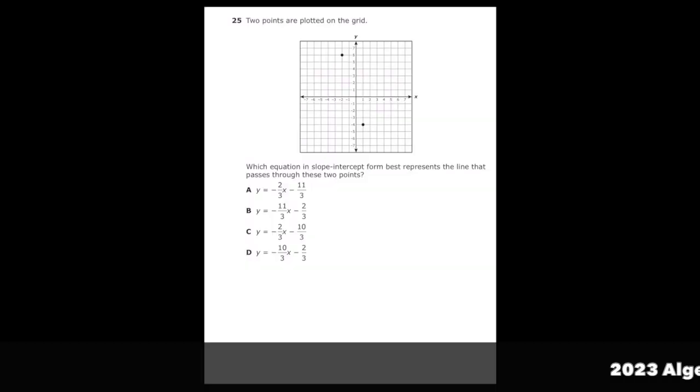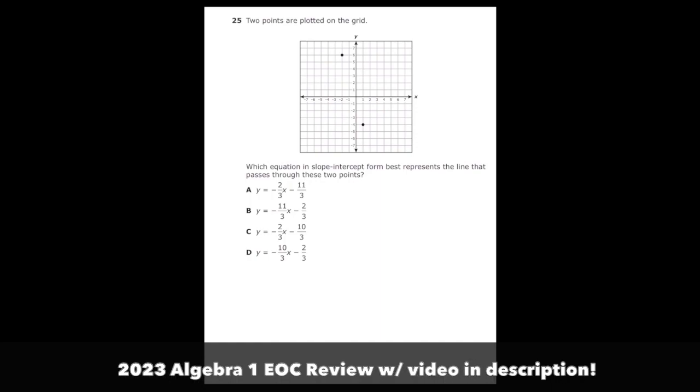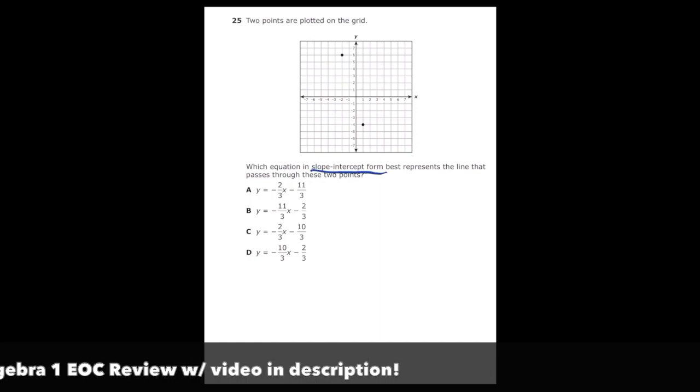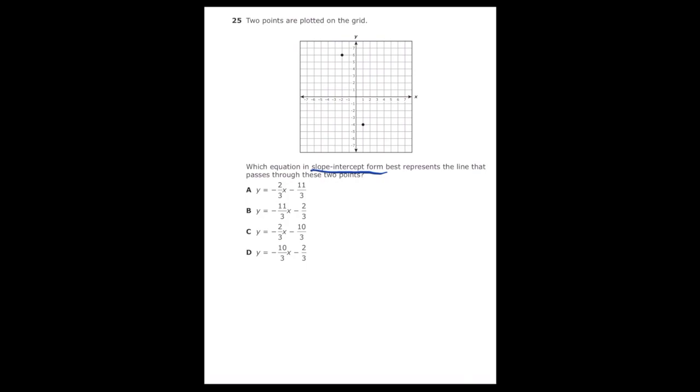This is number 25 from the 2022 Algebra 1 EOC. Two points are plotted on the grid. Which equation in slope-intercept form best represents the line that passes through these two points? So in slope-intercept form, we need to find the slope and the Y-intercept.